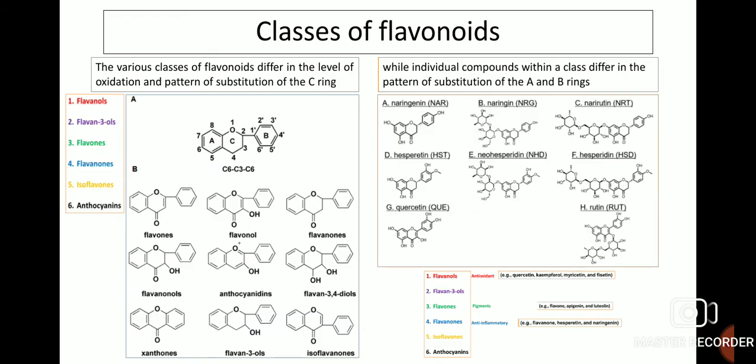The various classes of flavonoids differ in the level of oxidation and pattern of substitution of ring C. They are categorized into flavonols, flavones, flavanones, isoflavones and anthocyanins because of their structural differences in ring C. Individual compounds within a class differ in the pattern of substitution of rings A and B — for example, within flavonols, quercetin, kaempferol, myricetin and fisetin differ in their substitution at rings A and B.